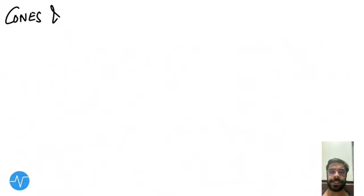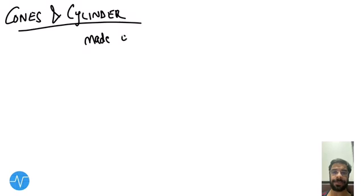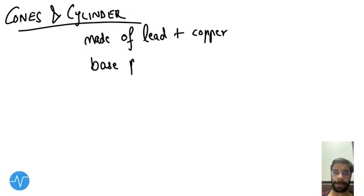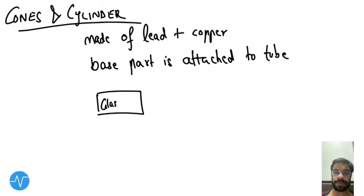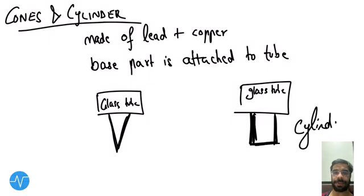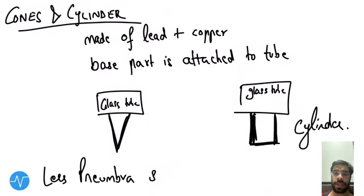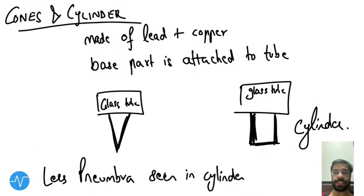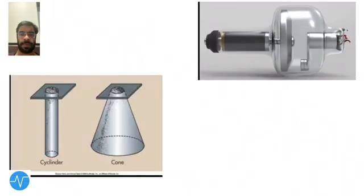The second beam restricting device is cones and cylinders. It is made up of lead and copper. The base part is attached to the x-ray tube. In the diagram, the base part of the cone and the base part of the cylinder are both attached to the tube. There is less penumbra seen with the cylinder compared to the cone.